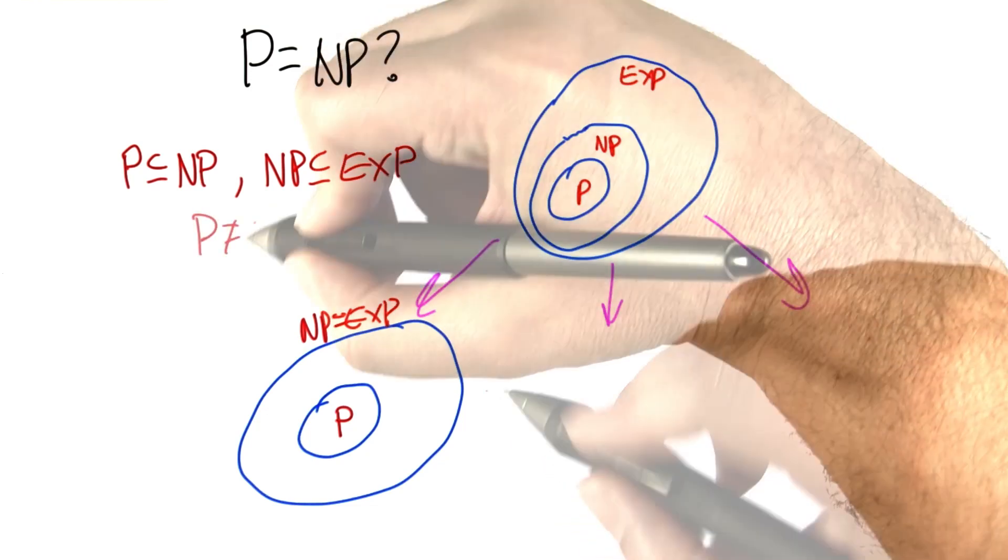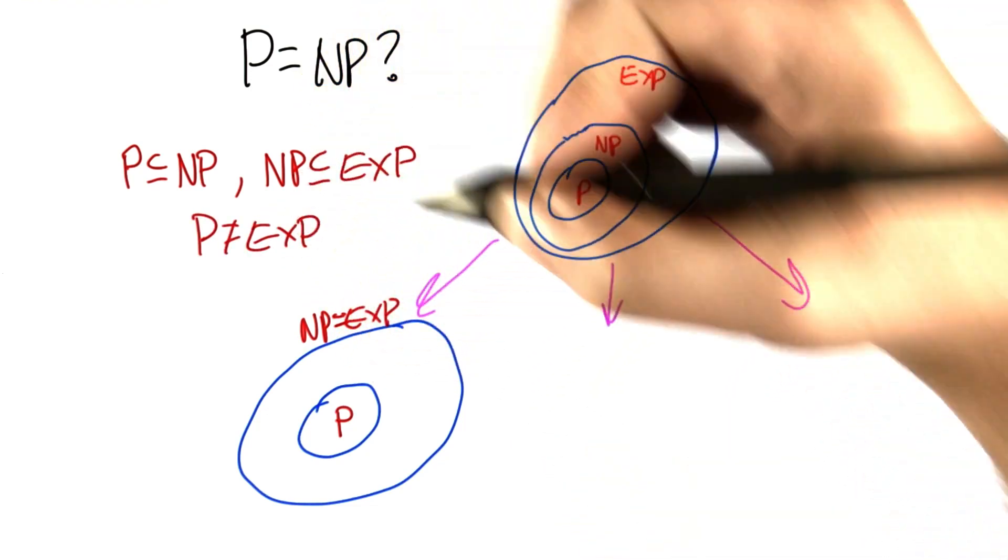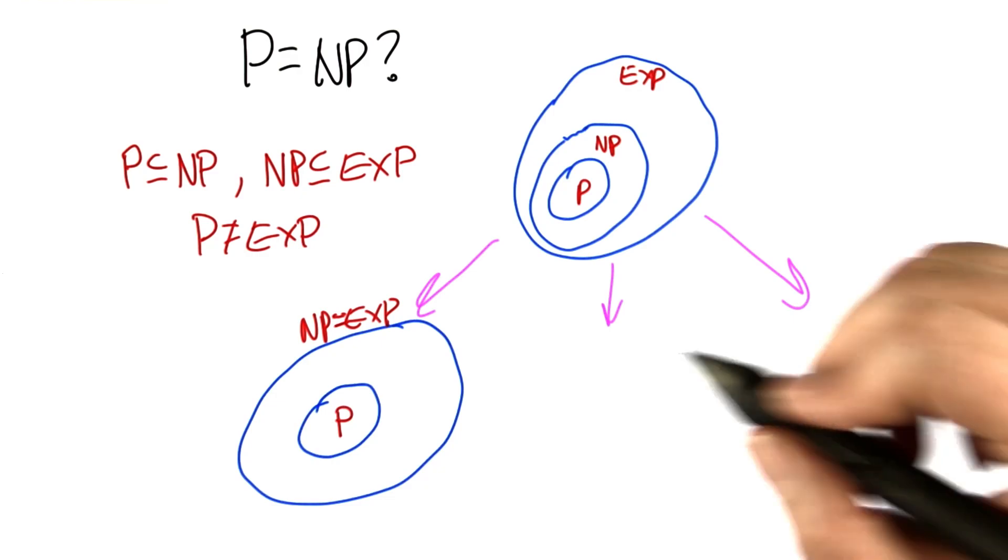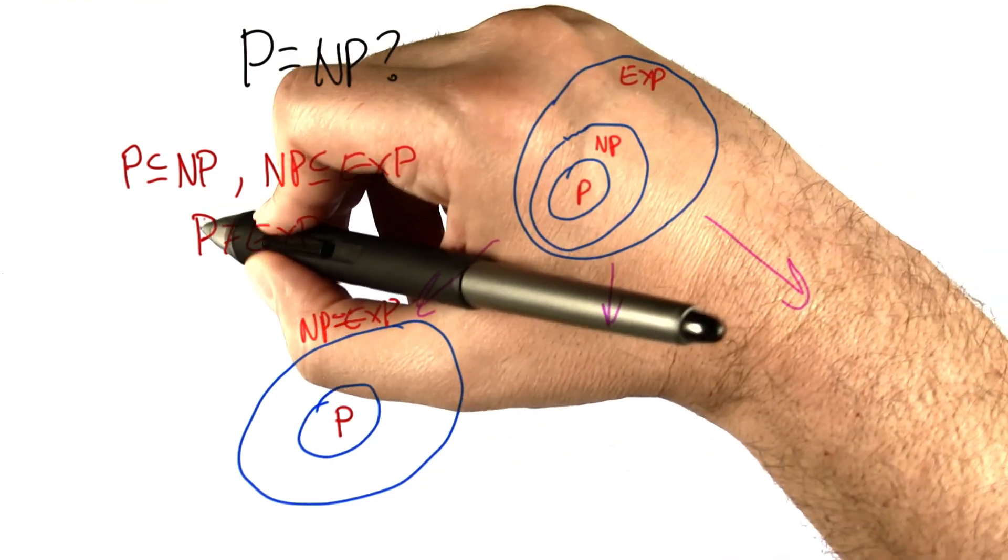Oh, there's one other thing that we know. We do know that there really is a difference between polynomial and exponential time. There's some problems that can be solved in exponential time that are definitely not in P.